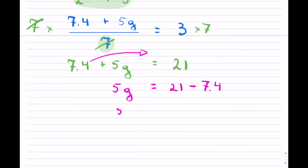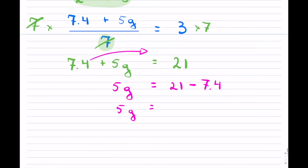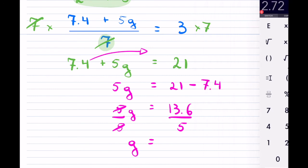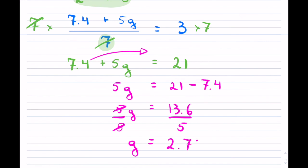So that gives me 5G equals. So this will become 13.6. Now dividing both sides by 5, I will be able to solve for my overall grade. So I have 13.6 divided by 5.